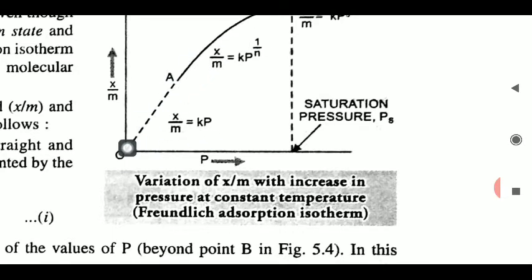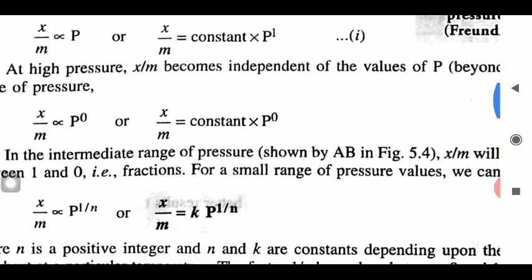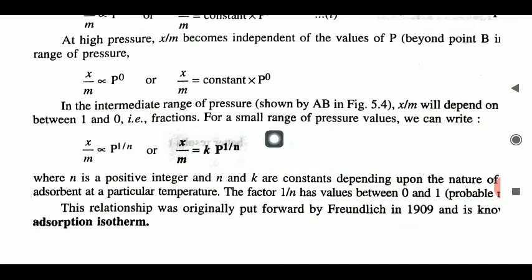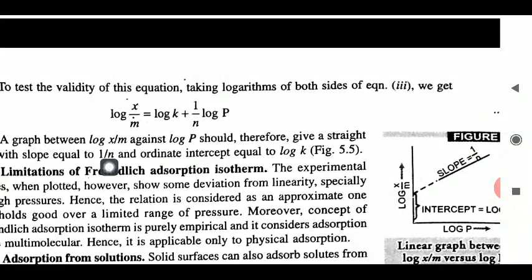In between initial and final stage, x/m = k × p^(1/n), जहाँ पर n एक integer है जो initial और final stage के बीच की कोई भी value को indicate करेगा। This Freundlich adsorption isotherm gives the relation: x/m = k × p^(1/n)। Taking log on both sides: log(x/m) = log k + (1/n)·log p। This is the final expression of the Freundlich adsorption isotherm।